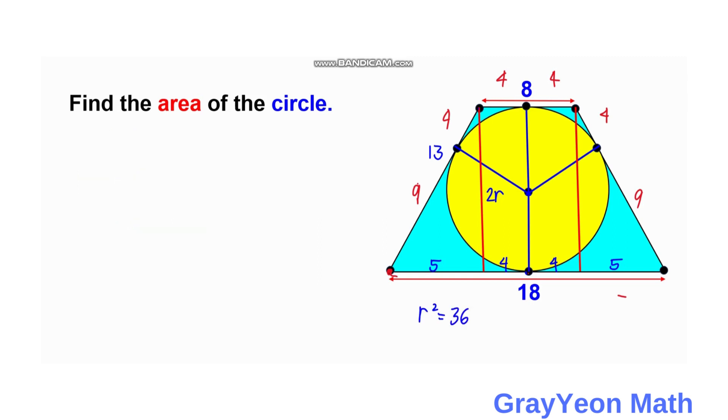For the final step, since we have the value of R squared, which is 36, so the area for any circle is, if you have the radius, that is pi R squared. So area is simply pi times, since R squared is 36, so this becomes 36. So area is equal to 36 pi square units. And that is our answer.